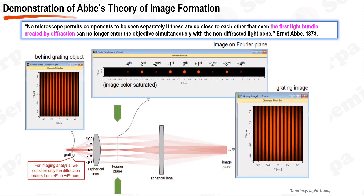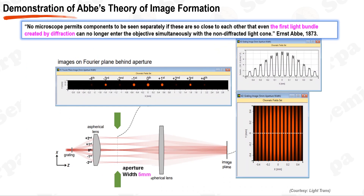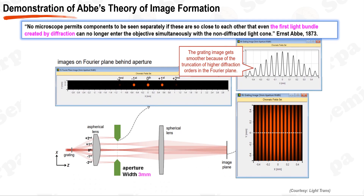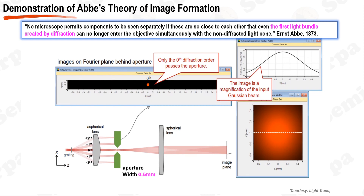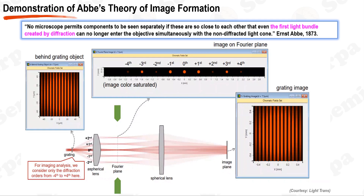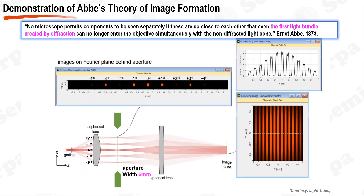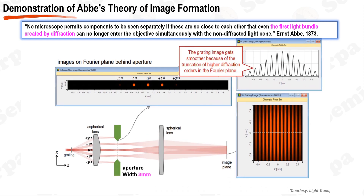This experiment underscores two pivotal insights. First, in line with Abbe's theory, for a clear image to form, the projection lens must capture at least the ±1st order diffraction, even if it misses higher orders. As patterns shrink, capturing these becomes more challenging due to wider diffraction angles. Second, while an image formed solely from ±1st order is smoother and lacks clarity, this issue can be addressed with the photoresist contrast curve — a topic for upcoming discussion.